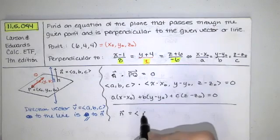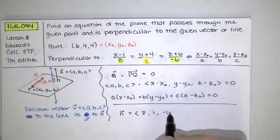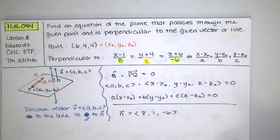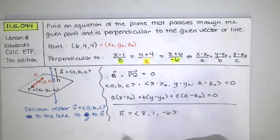So they could just be equal to each other if we wanted them to be. So the normal vector would have components 8, 1, and negative 6. And we have this point x naught, y naught, z naught.